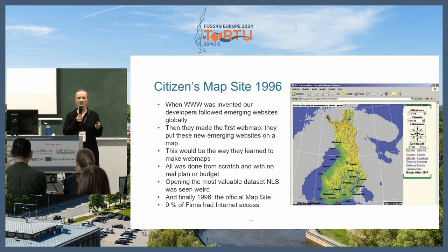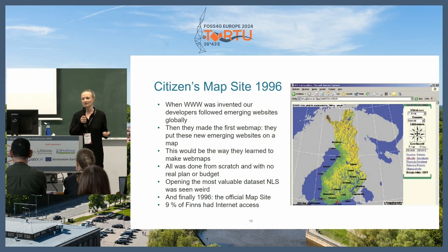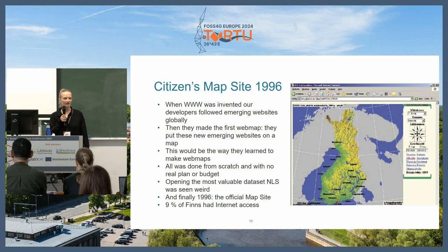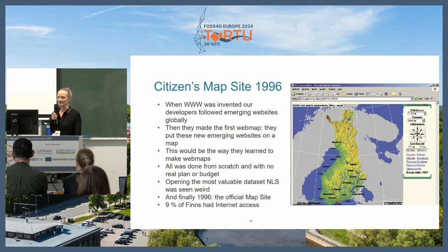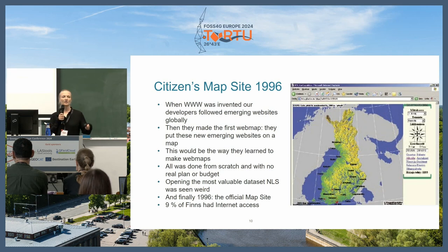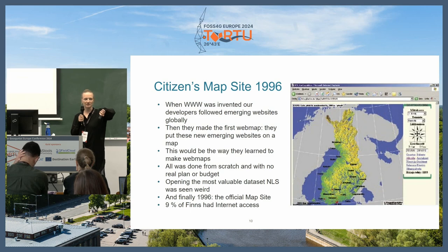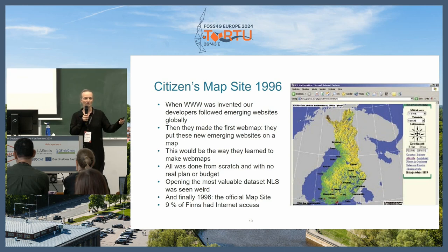Why would National Land Survey actually share their most valuable asset for free, for everyone, without a fee? Our developers were very interested in what was happening. There were two particular guys who would start making their first web map of the websites that companies in Finland were publishing — putting a marker on a map like 'this company in Helsinki published a website.' They would become more and more, and suddenly you would have to have a zoomable map. Things start happening, you learn how to do web maps.